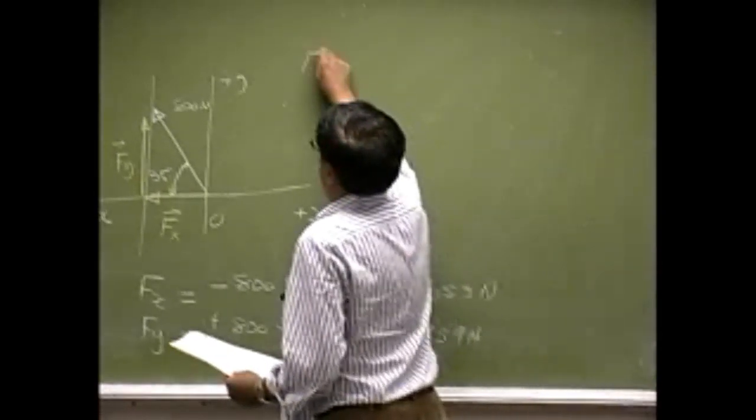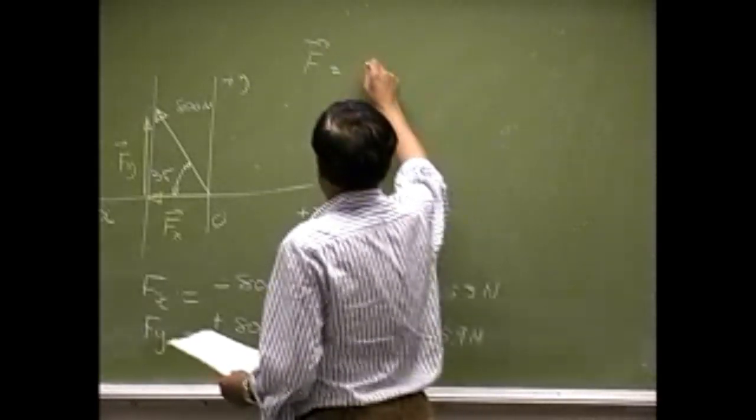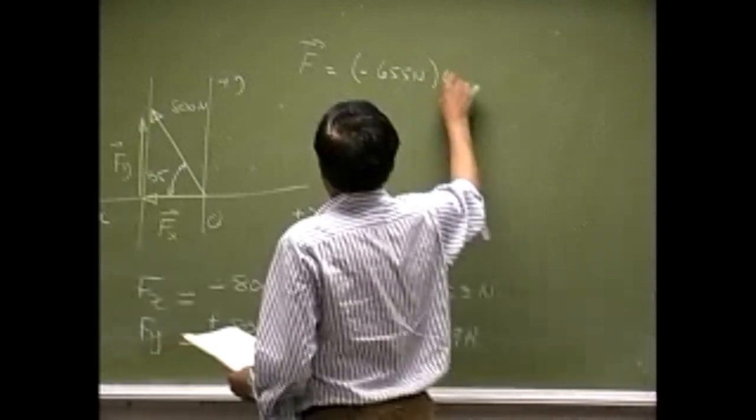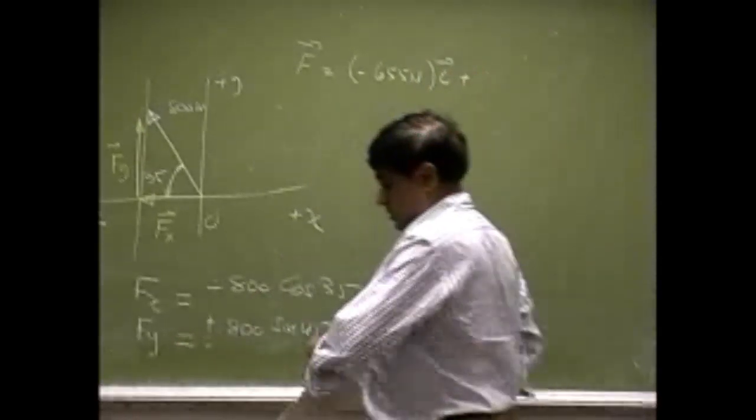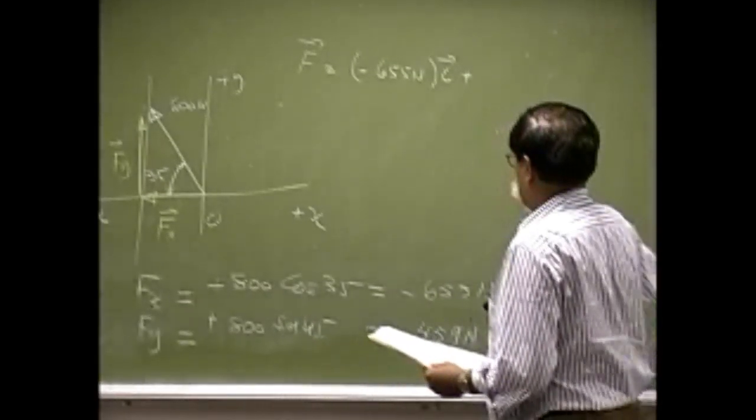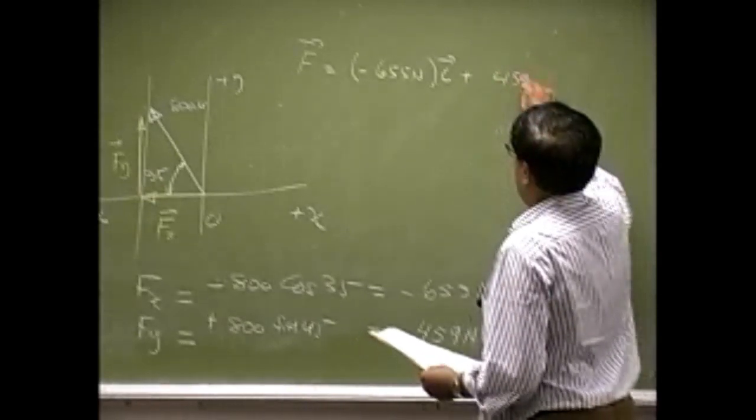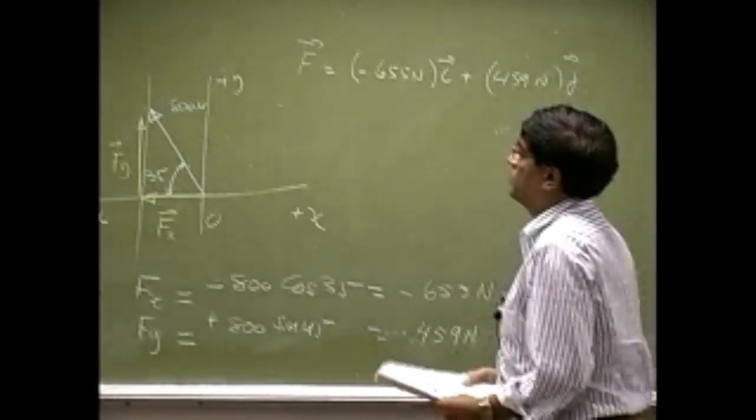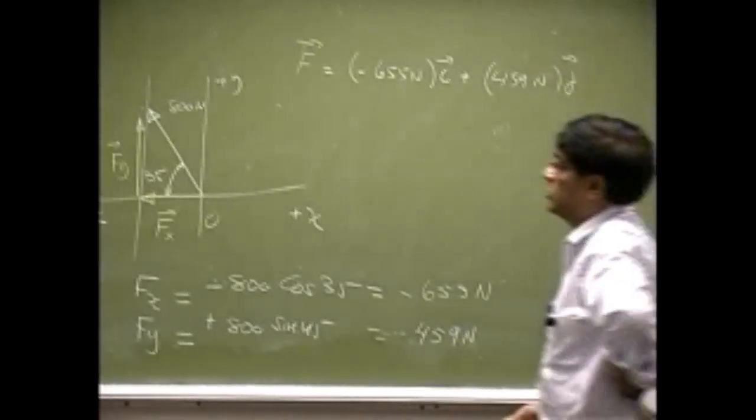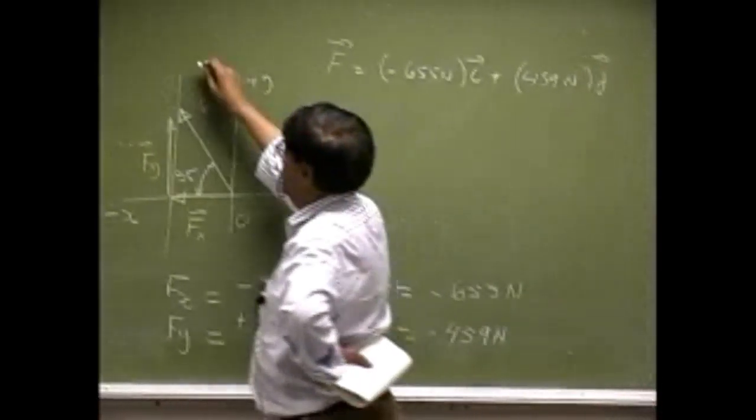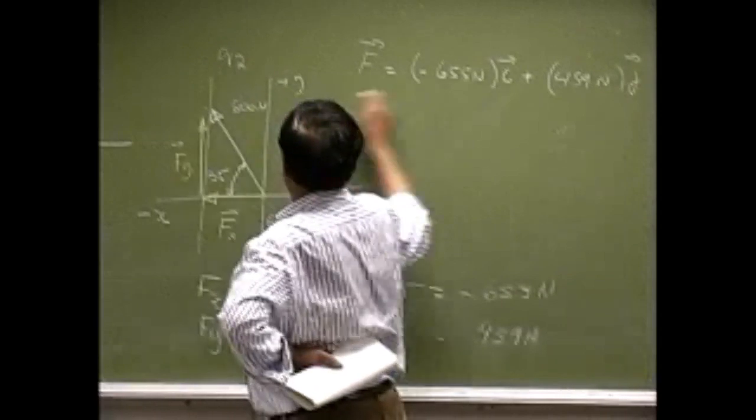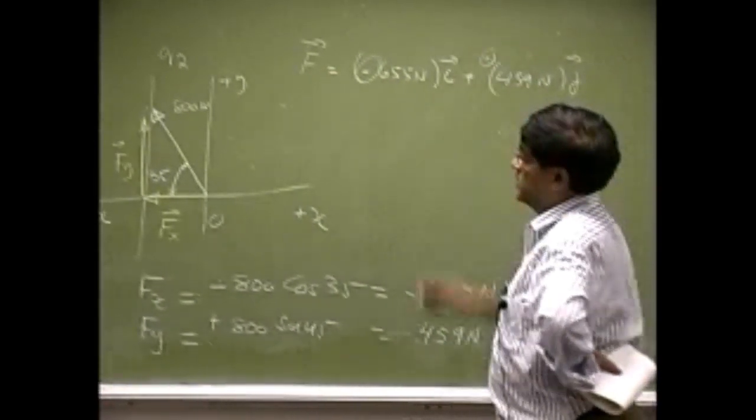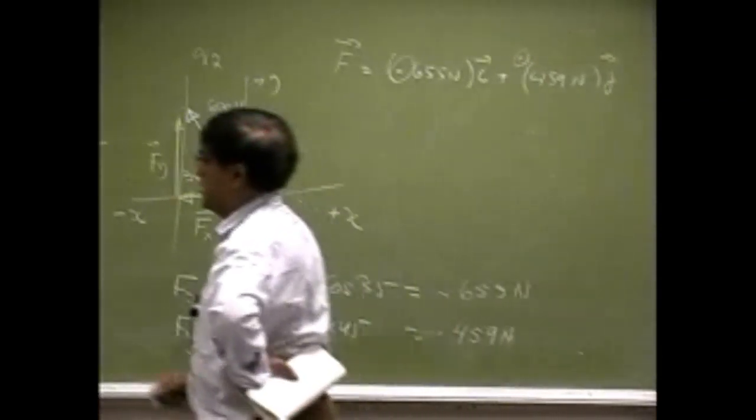So your force F is going to be negative 655 Newton times i and then we got the second force 459 Newton times the j. This is the same thing we had before. The force was in the second quadrant. You have a negative here and then there is a positive Y axis.